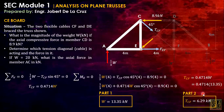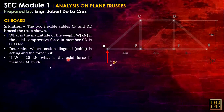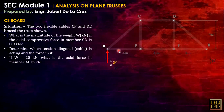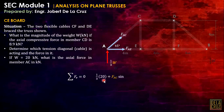For part 3, if W equals 20 kN, we calculate the actual force in member AC using the method of joints at joint A. With RA equal to one-third of 20 equals 6.67 kN upward, and FAC inclined at 45 degrees: summation of vertical forces gives one-third W plus FAC sine of 45 equals zero, giving FAC equals negative 9.43 kN. The negative sign indicates member AC is in compression.